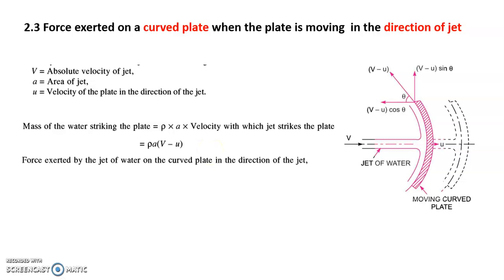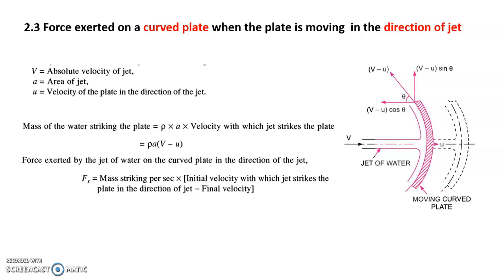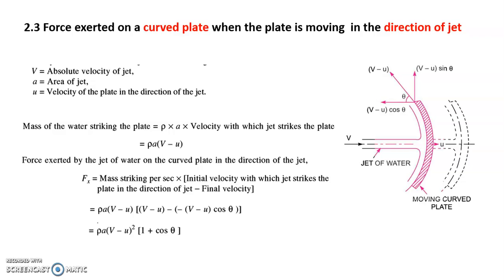The force exerted by the jet of water on the curved plate in the direction of the jet, Fx, equals mass per second times (initial velocity before striking minus final velocity after striking). Mass per second is rho times a times (v minus u). The initial velocity before striking in the x-direction is v minus u, and after striking the velocity component in the x-direction is minus v minus u cos theta. Simplifying gives Fx equals rho times a times (v minus u) squared times (1 plus cos theta). In the stationary case, this formula was rho times a times v squared times (1 plus cos theta).